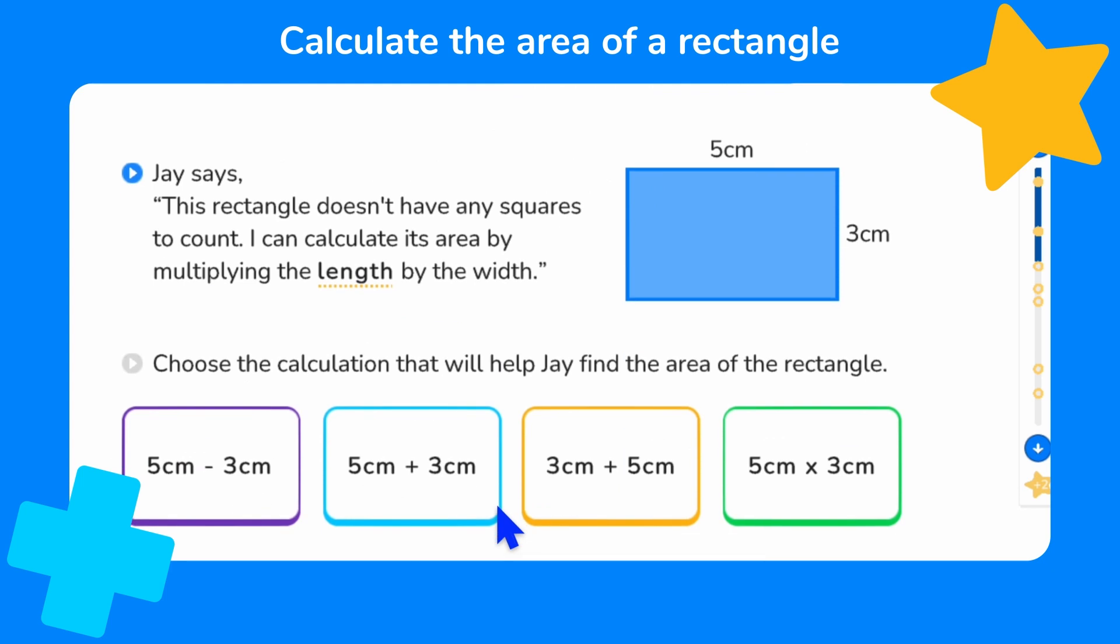Now, Jay says this rectangle doesn't have any squares to count. I can calculate its area by multiplying the length by the width. We can see that the length of this rectangle is five centimeters and the width is three centimeters. We need to choose the calculation that will help Jay to find the area of the rectangle. Jay has explained that to calculate the area, we can multiply length by width. Which calculation do you think Jay needs to solve? Well done if you knew it was five centimeters multiplied by three centimeters.